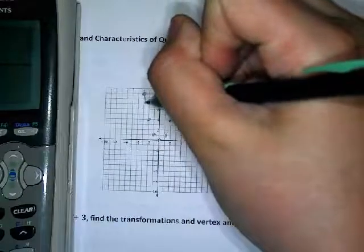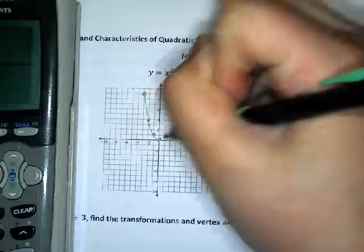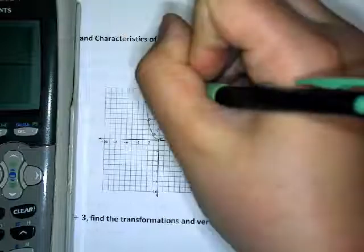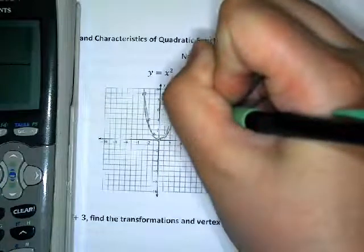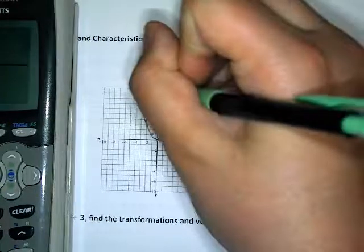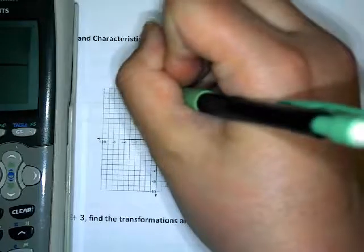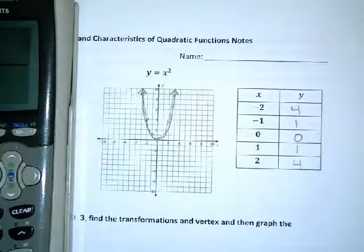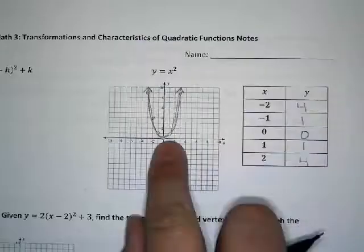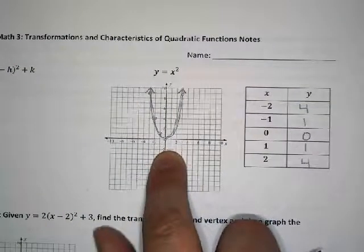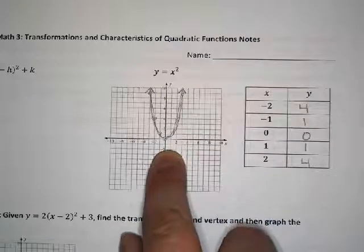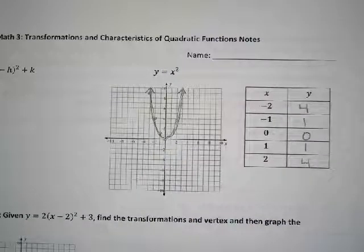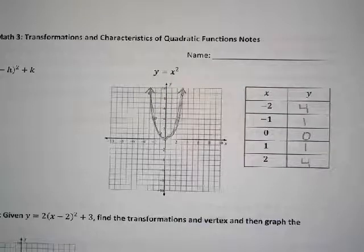The shape it should be is a nice U-shape — not a V but a nice U-shape. So I'll draw this and make sure it looks U-shaped. This is the normal graph with no transformations happening to it. It hasn't been shifted right or left, up or down, reflected over the x-axis, or stretched or compressed. Nothing's happened to it — it's just normal.